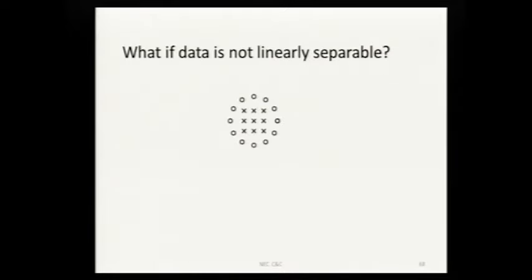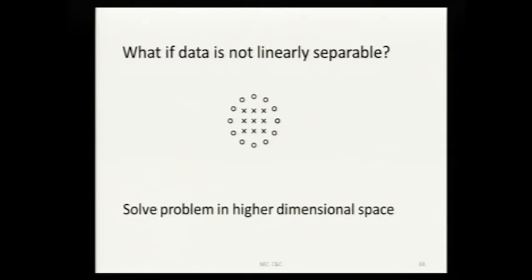What if your data is not linearly separable? You might map the data to a higher dimensional space where it is linearly separable. In this case, I might add a third coordinate and take each data point depending on how far it is from the origin and move it out from the plane. The zeros are farther from the origin than the x's, so I'm going to pull the zeros out. I can easily put a plane between the zeros and x's.